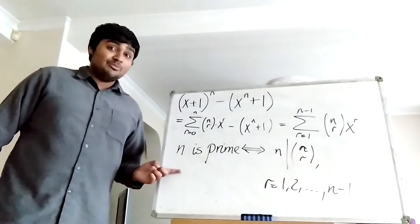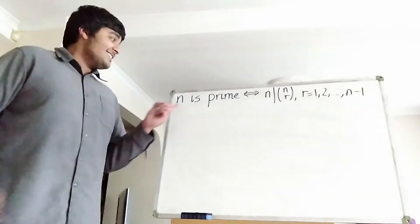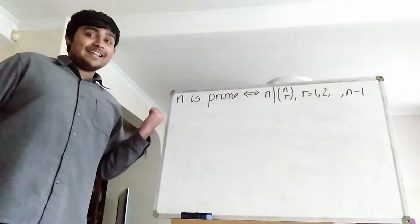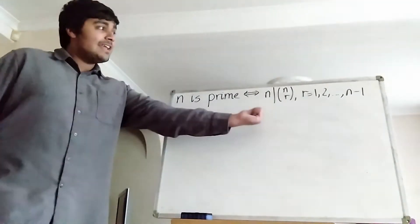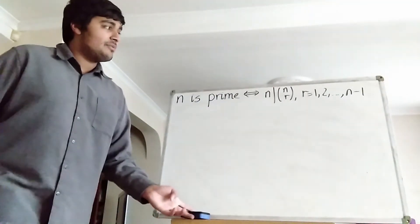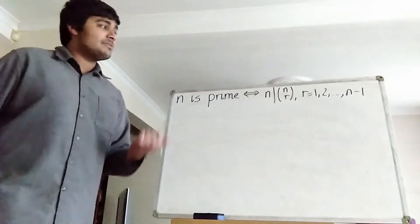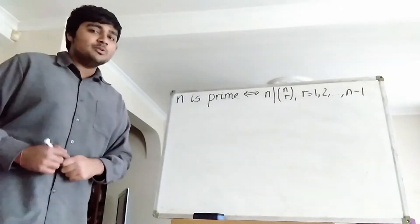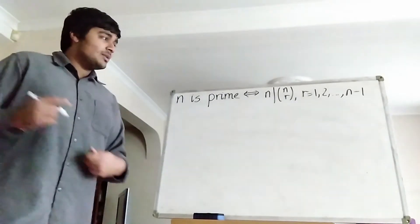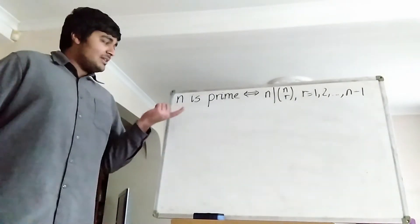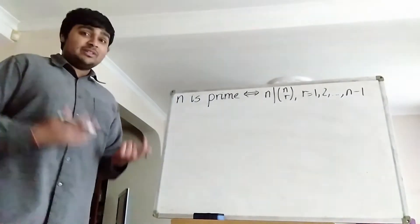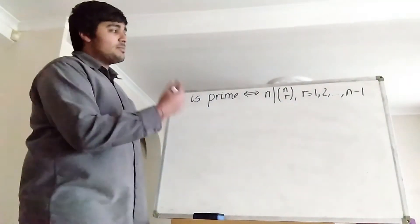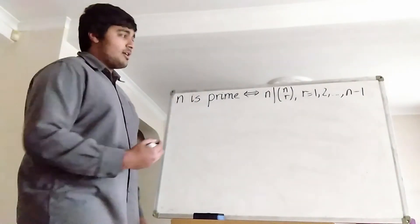Now let's prove that this is true. Let's firstly prove this direction: if n is prime, then n divides each of these coefficients — n divides n choose r for r equals 1, 2, all the way up to n minus 1. Since n is prime, let's denote n with p. That's quite standard, so p is a prime number. And we want to show that p divides p choose r.